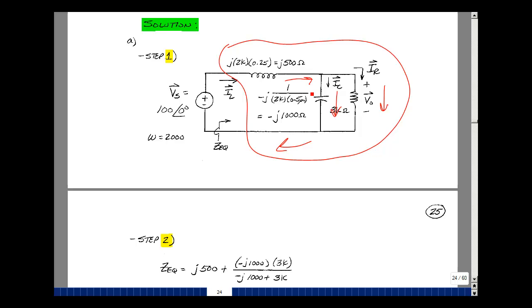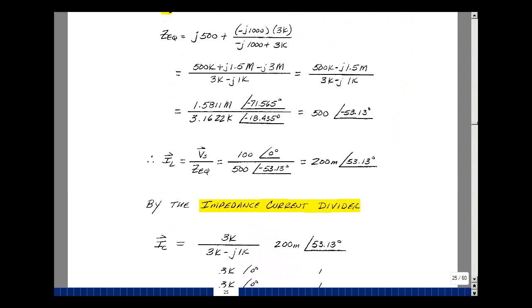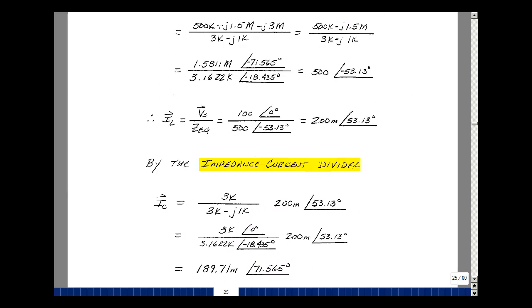So let's solve for the current in the capacitor first. It's going to be the other element if we use the impedance current divider. So it would be the 3K resistor over the sum of the two times the current, which was 200 milli at angle 53.13 degrees.